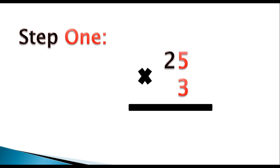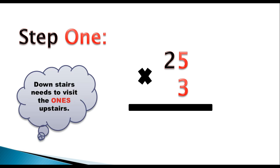In step 1, we have the same problem, 25 times 3. You're going to do the numbers that are in red, these factors right here, 5 and 3. The downstairs needs to visit the 1's place in order. They visit everybody in order upstairs. So we're going to start with the 1's place. So 3 times the 5, 3 is a factor, and 5 is a factor, 3 times 5 gives you a product of, that's right, good job, gives you a product of 15.